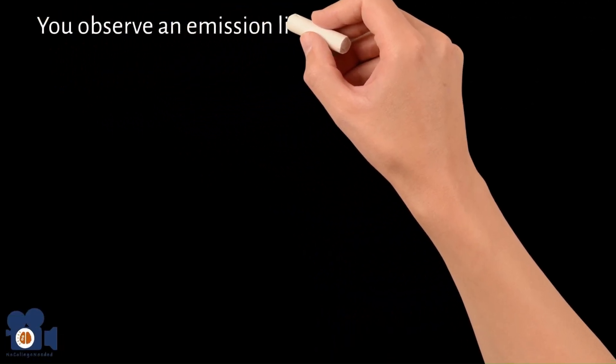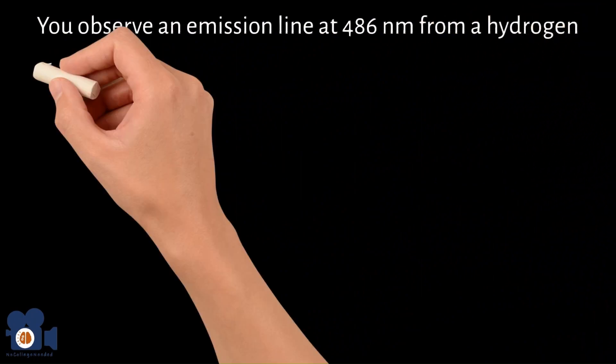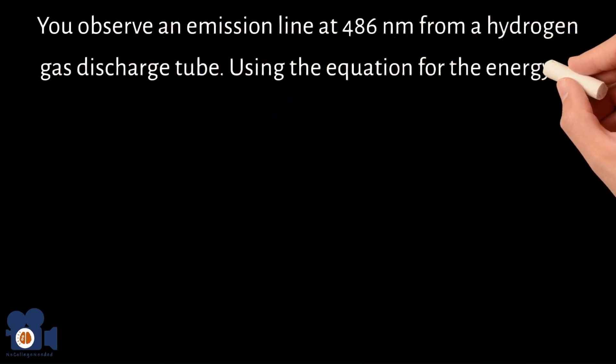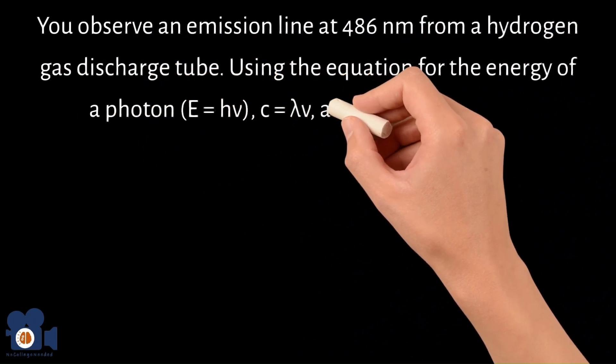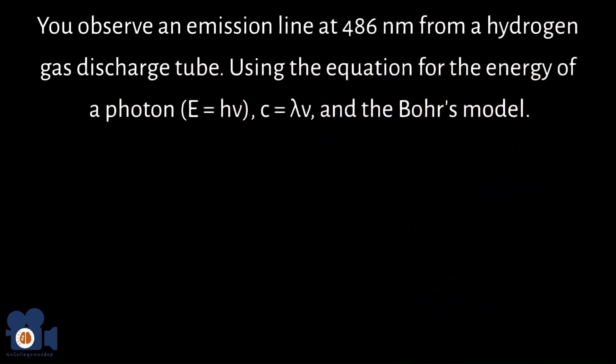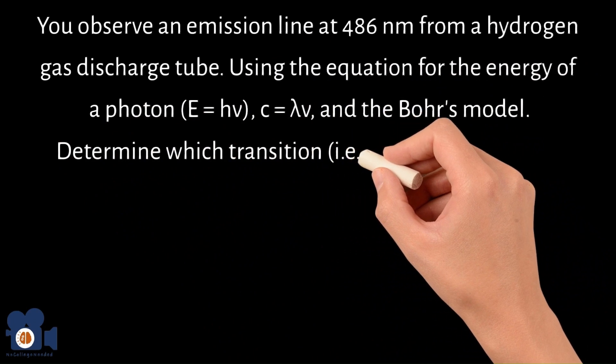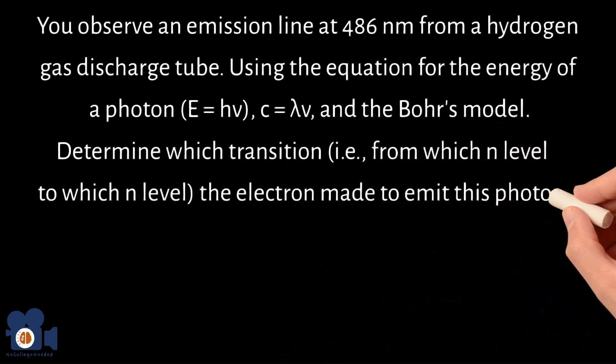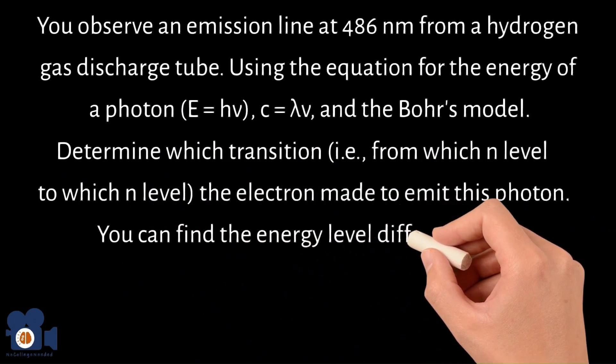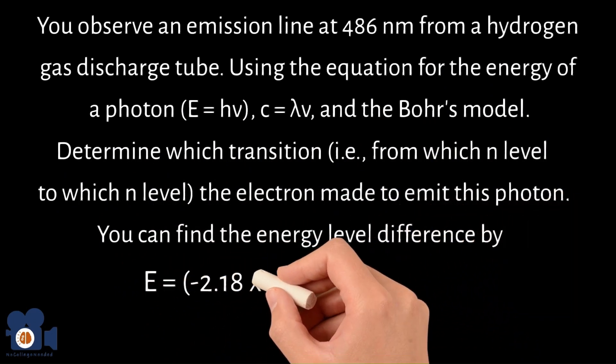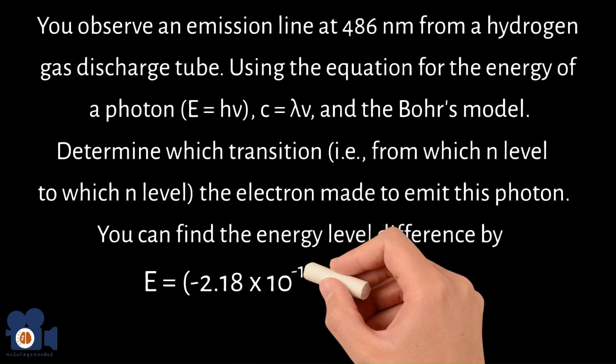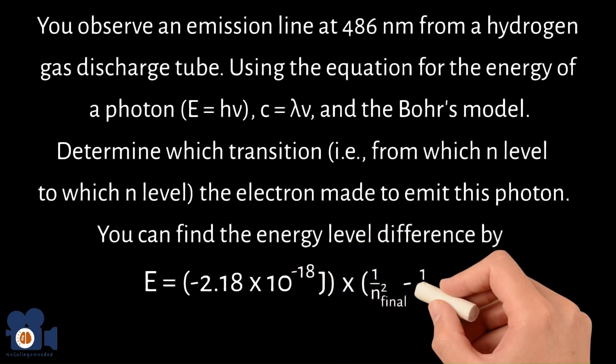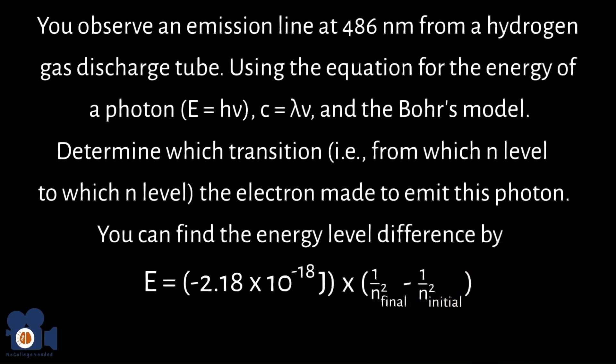You observe an emission line at 486 nanometers from a hydrogen gas discharge tube. Using the equation for energy of a photon, E equals HV, C equals lambda nu, and the Bohr's model, determine which transition, from which n level to which n level, the electron made to emit this photon. You can find the energy level difference by E equals negative 2.18 times 10 to the negative 18th joules times 1 divided by n squared final minus 1 divided by n squared initial.